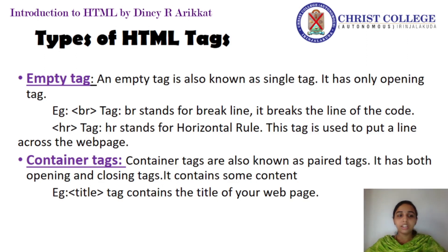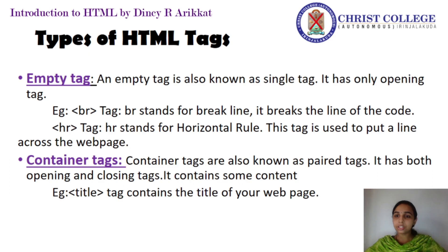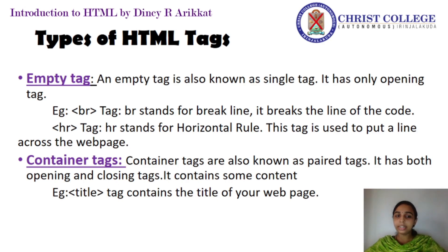There are two types of HTML tags. The first one is container tag and the second one is empty tag. A container tag contains some content and is also known as a pair tag since it has both opening and closing tags — for example, the title tag. But some tags have only an opening tag; such tags are called empty tags. They are used for some special purpose — for example, the br tag for line break and the hr tag for horizontal line.